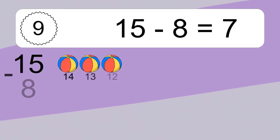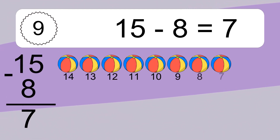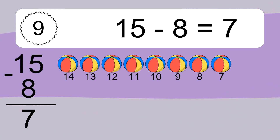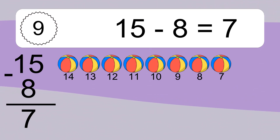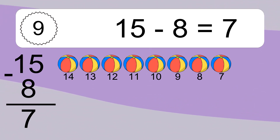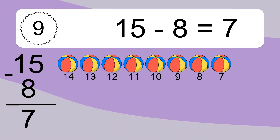15 minus 8 equals what? 15 minus 8 equals 7. Let's count it: 14, 13, 12, 11, 10, 9, 8, 7.